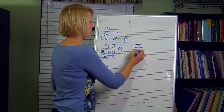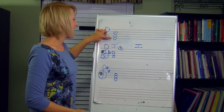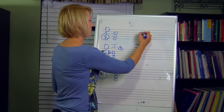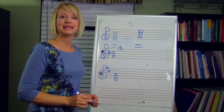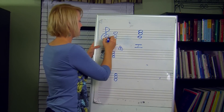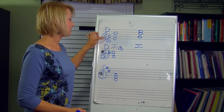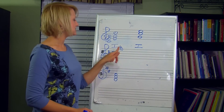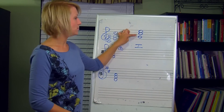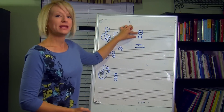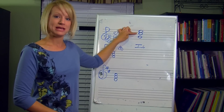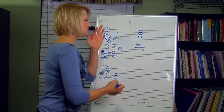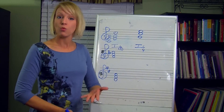Now if I want to do second inversion, I take my first inversion and take the bottom note and stick it up on top. So second inversion is going to have the fifth as the bottom note, my C stays there, and now I have my E up on the top as well. Root position was C-E-G stacked in thirds. First inversion, I took the C and stuck it up on top. Second inversion, I took my E and stuck it up on top. Now second inversion is not a 6-3 anymore. There is still a sixth between the bottom and top note, but the generic interval between the bottom note and the middle note is now a fourth, not a third. So second inversion is often notated in classical music as 6-4.